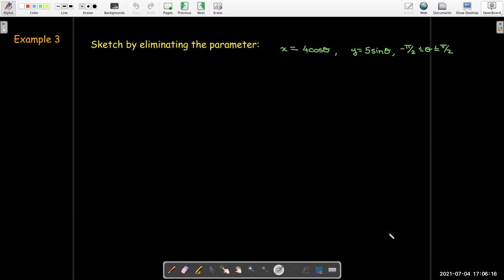So let's go back and look at some other parametric curves and see if we can sketch them without having to use the table of values. So here we're given x equals 4 cosine theta. Y equals 5 sine theta. And theta only goes between negative pi over 2 and pi over 2.